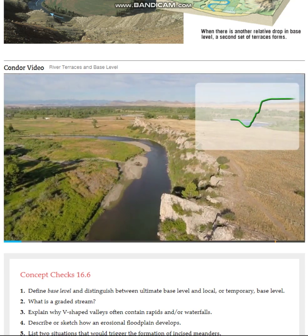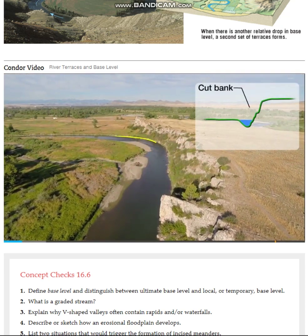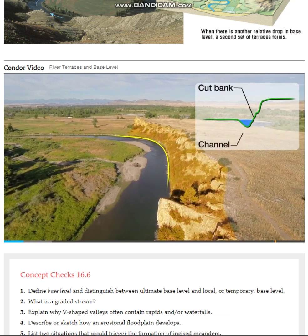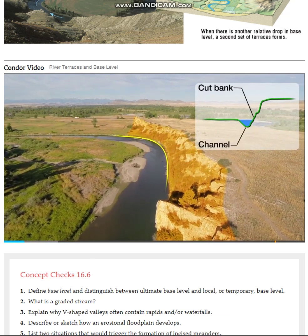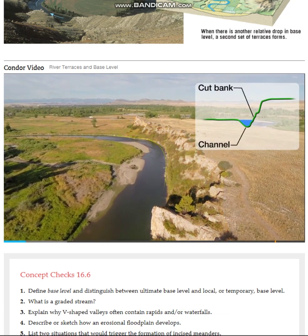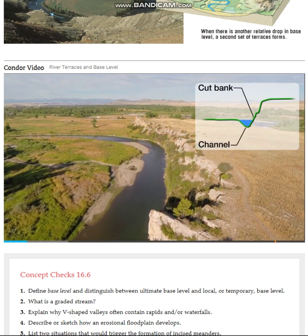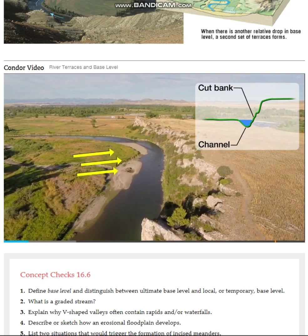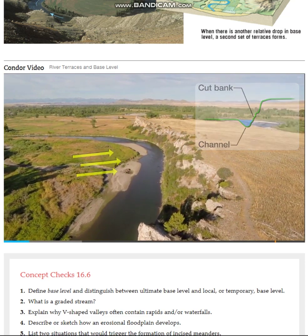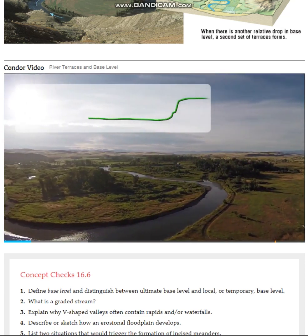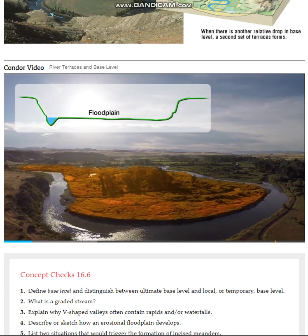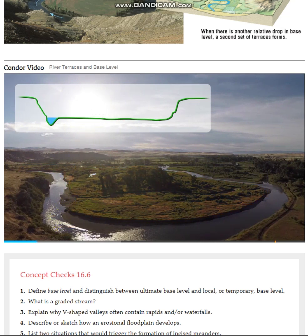This meandering channel is eroding at the cut bank and creating the bluff on the right side of the channel. This erosion is lateral and is making the wide river valley even wider. The low valley floor at the level of the river will continue to get wider with continued erosion at the cut bank. There is currently no downward erosion.